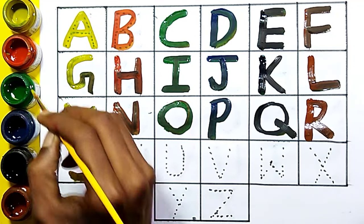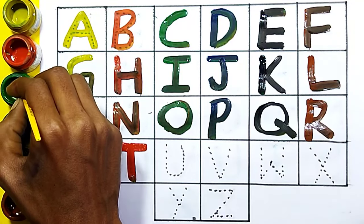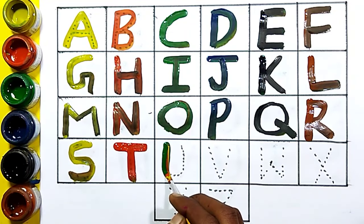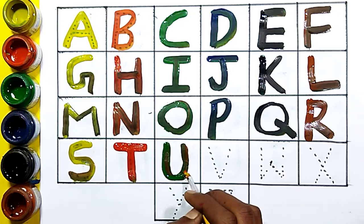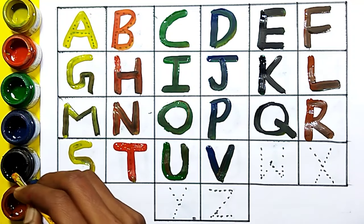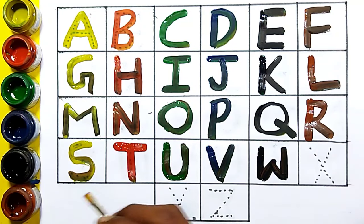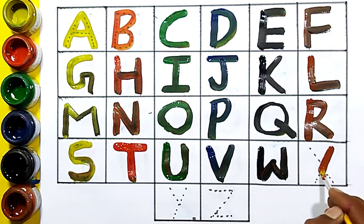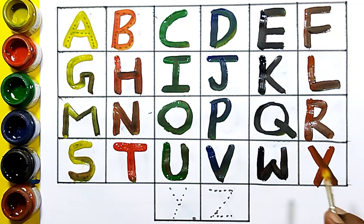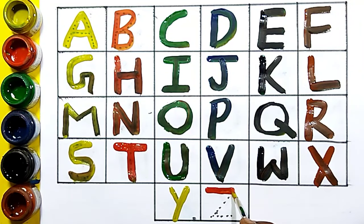P for parrot, black color. Q for queen, brown color. R for red, yellow color. S for sun, red color. T for tiger, green color. U for umbrella, blue color. Z for joker hat.